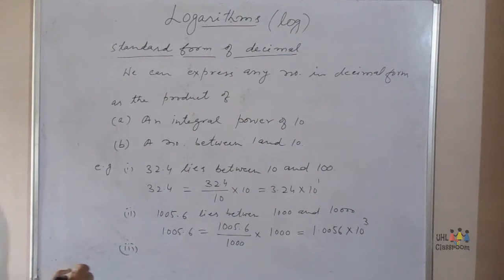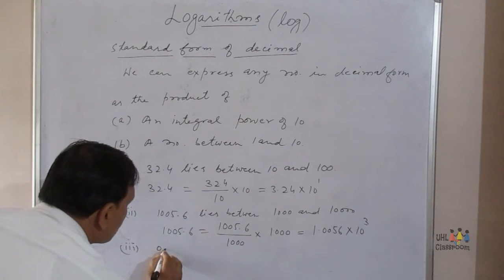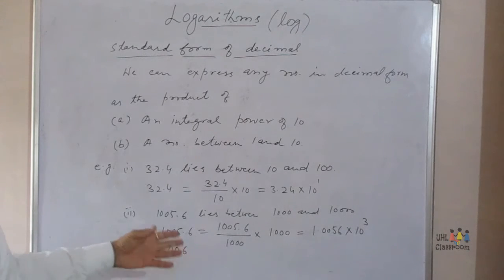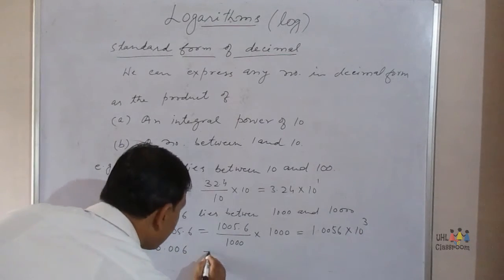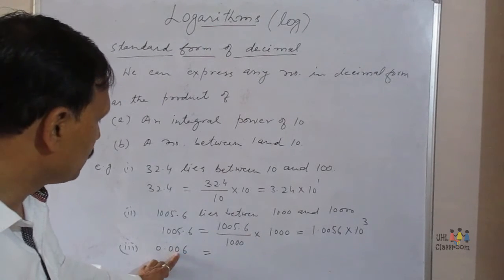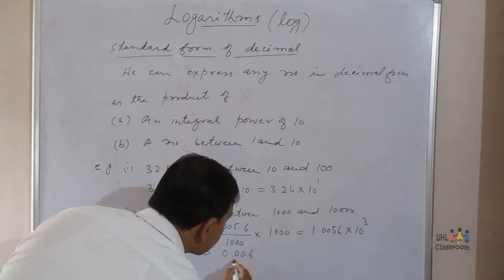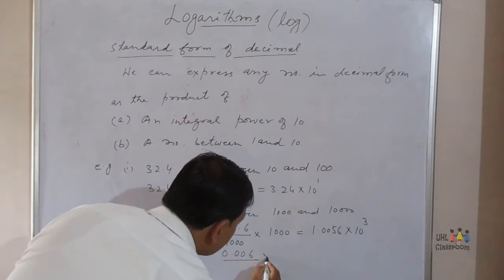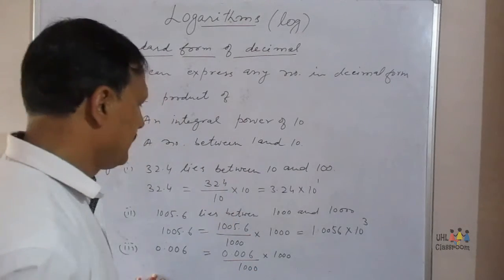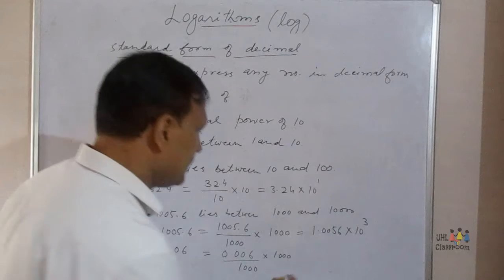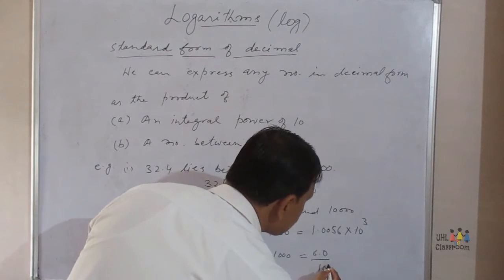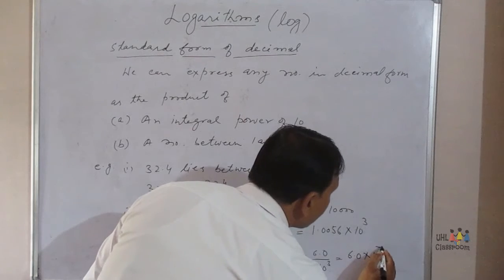Another example: 0.006. This number lies between 0.001 and 0.01. It can be written as 0.006 divided appropriately, giving 6.0 multiplied by 10^(−3). So 0.006 = 6.0 × 10^(−3).